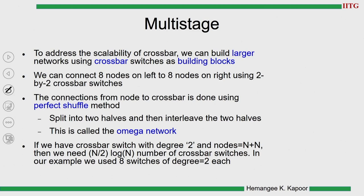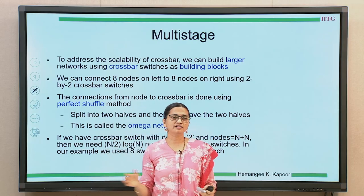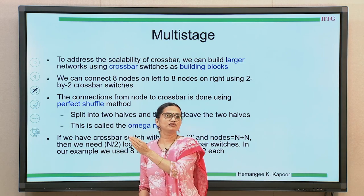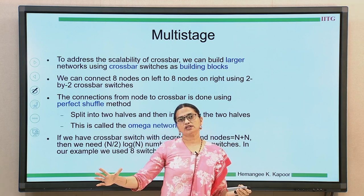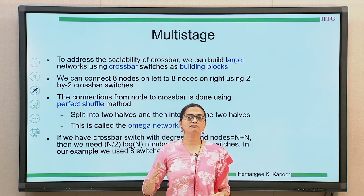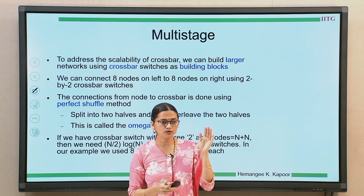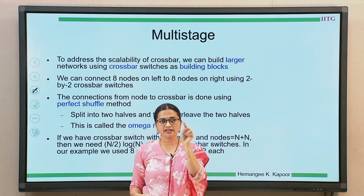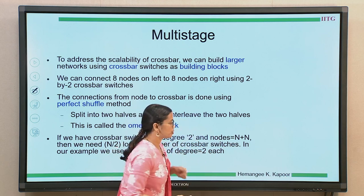The drawback of the crossbar is scalability — it grows quadratically, order n squared. Can we do better? We can design networks that are more modular. Instead of one big crossbar that quadratically increases, we use small crossbars and connect multiple of them in layers — multiple crossbars connected as stages. That is why it is called a multi-stage network. The building blocks are small crossbars, and nodes connect through intermediate crossbar stages to reach the other side.